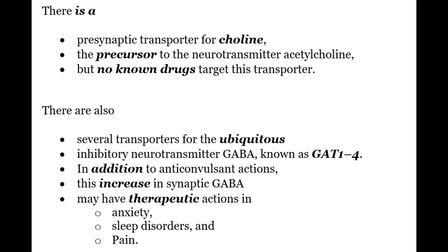Now let's discuss some other neurotransmitter gene families as targets for psychotropic drugs. There is a presynaptic transporter for choline, the precursor to acetylcholine, but no known drug targets this transporter. There are also several transporters for the inhibitory neurotransmitter GABA, known as GAT1-4. In addition to anticonvulsant actions, blocking these increases synaptic GABA availability and may have therapeutic action in anxiety, sleep disorders, and pain.